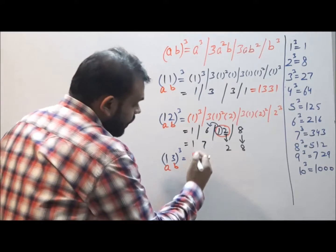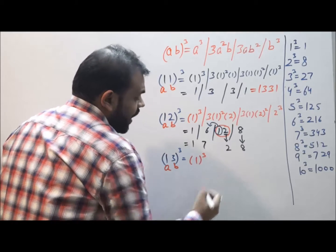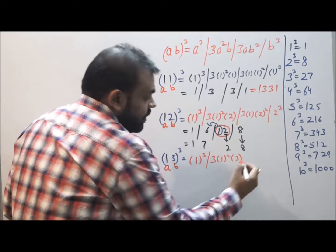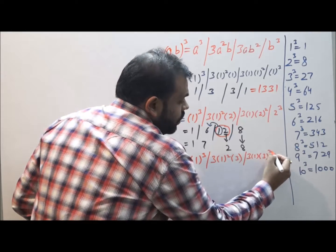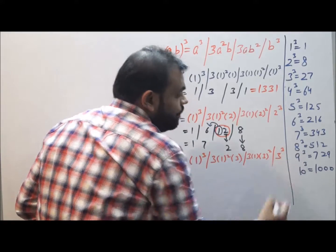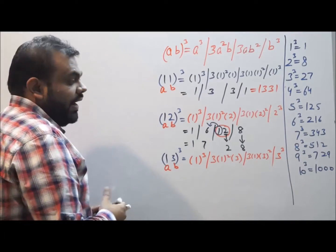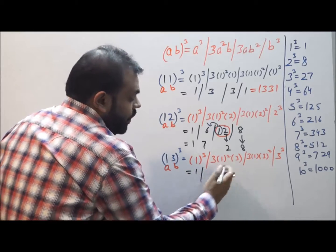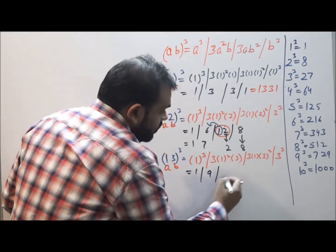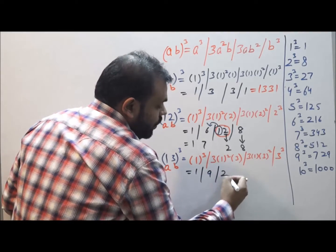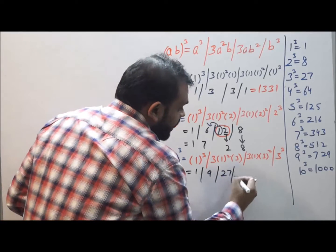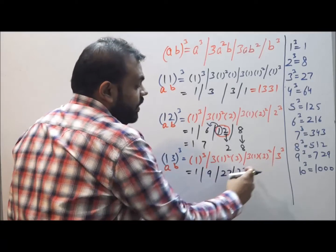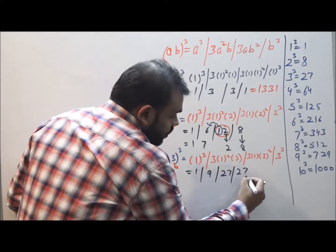Putting down the values in the formula: 1³ / 3(1²)(3) / 3(1)(3²) / 3³. Now solving it and getting the answer, we can see that 1, 3 × 1² × 3 is 9, 3 × 3² = 3 × 9 = 27, and the cube of 3 is 27.